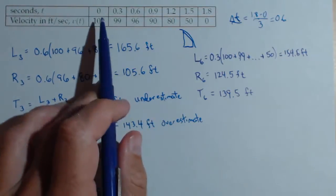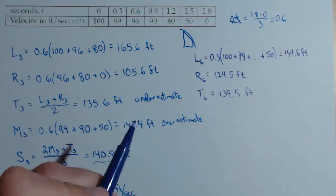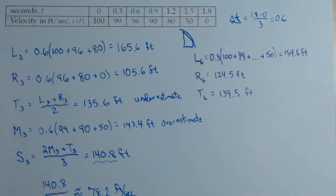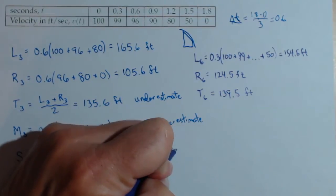One thing that's interesting, because we're using all the data points, we don't know the midpoints. So we're not going to be able to calculate the midpoint rule with six. But we will be able to do Simpson's rule with six.